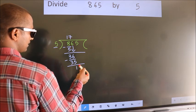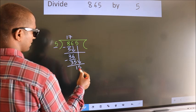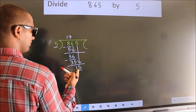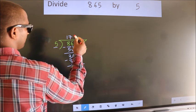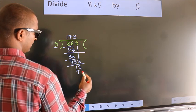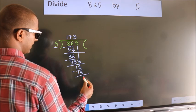After this, bring down the beside number. So, 5 down. So, 15. When do we get 15? In 5 table. 5 3s 15. Now, we subtract. We get 0.